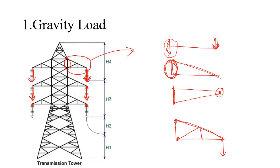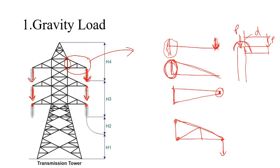If we have a point load acting on the cantilever, we can replace it like this: say this is the column and we have a cantilever beam with a load at the tip. We can say that at the base there is a load acting at the center of the column as well as a moment. If the distance is d and the load is P, then the moment has magnitude P×d. This point load is applied at the top and goes to the foundation through the vertical member as well as the inclined member.